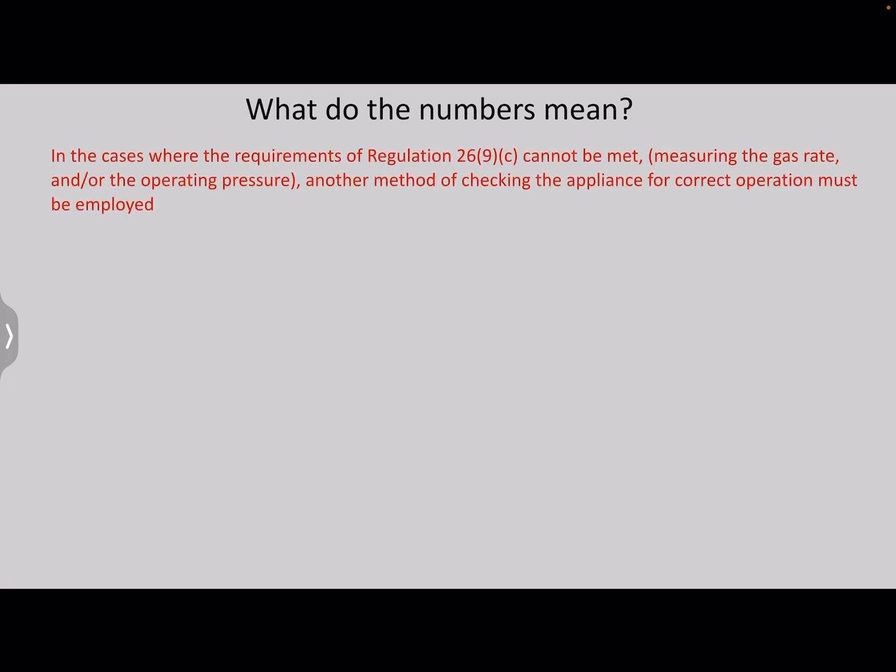Occasionally, you'll get asked about a series of numbers. For example, here's an example question: In the cases where the requirements of regulation 29 bracket 9 bracket C cannot be met, measuring the gas rate and or the operating pressure, another method of checking the appliance for correct operation must be employed. It's not really a question, that's actually a regulation. So how do we find that regulation if you get asked a question on regulation 26 9 C?